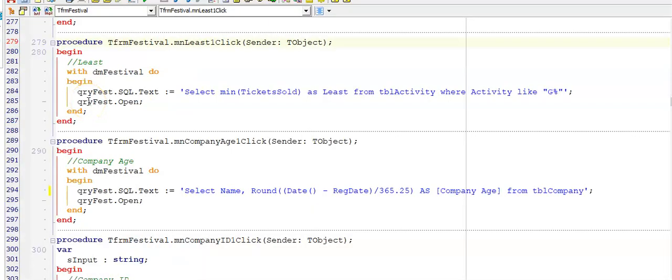This is the memo for the least menu. I had to display the smallest number of tickets sold. So the least number of tickets sold using min. And then I had to show those only for the activities that started with G. So remember we're going to use LIKE G and then a percentage sign to indicate any number of characters after the G.